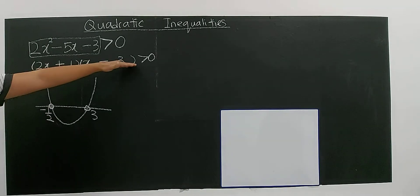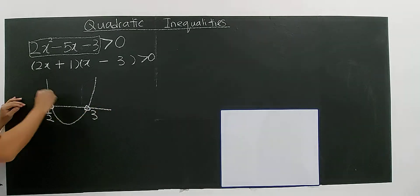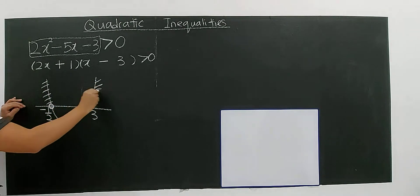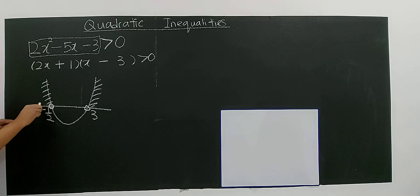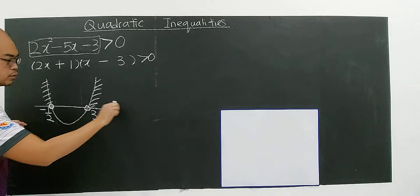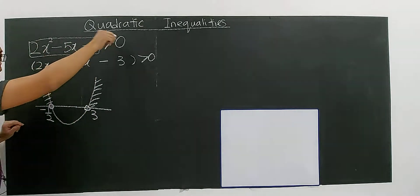So now, any positive, positive means the line above the x-axis. So this is the region, this is the region where the quadratic is positive.